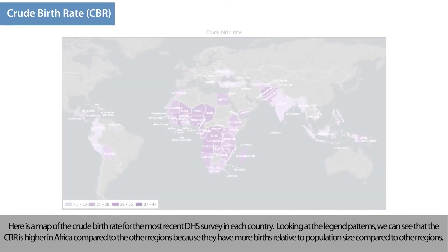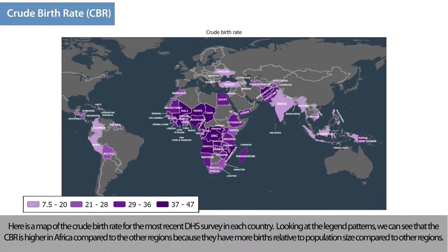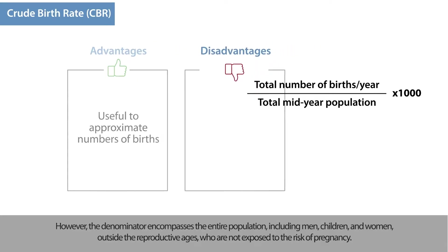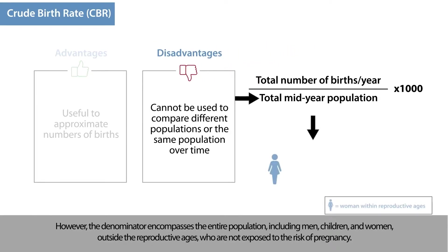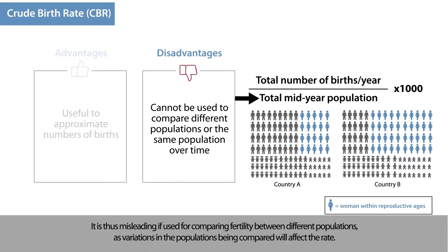Here is a map of the crude birth rate for the most recent DHS survey in each country. Looking at the legend patterns, we can see that the CBR is higher in Africa compared to other regions, because they have more births relative to population size. The CBR is a useful measure to approximate numbers of births in a population when limited information is available. However, the denominator encompasses the entire population, including men, children, and women outside the reproductive ages who are not exposed to the risk of pregnancy. It is thus misleading if used for comparing fertility between different populations, as variations in the populations being compared will affect the rate.